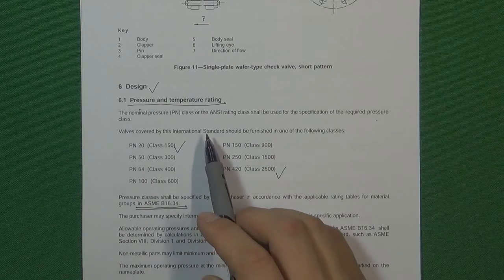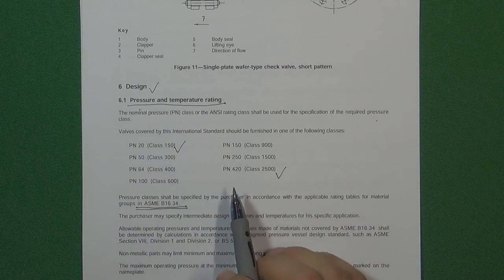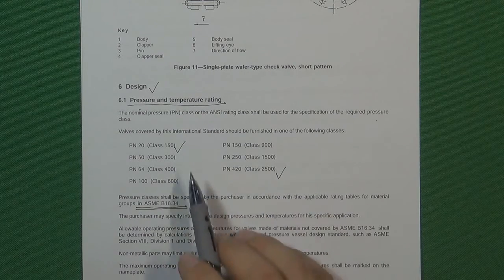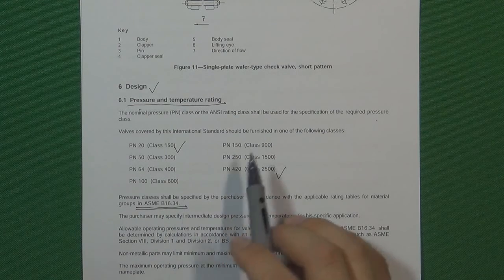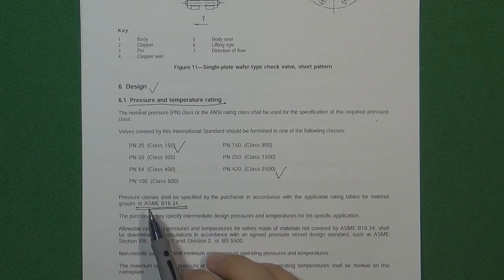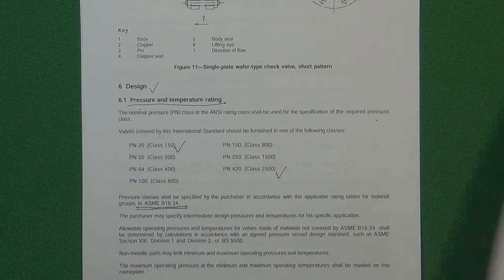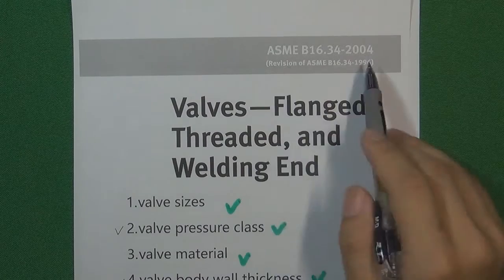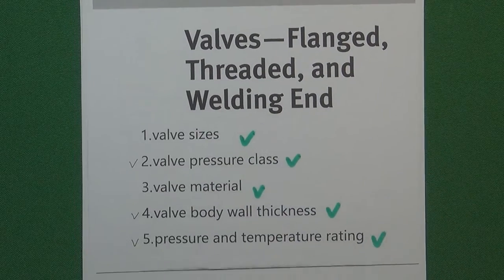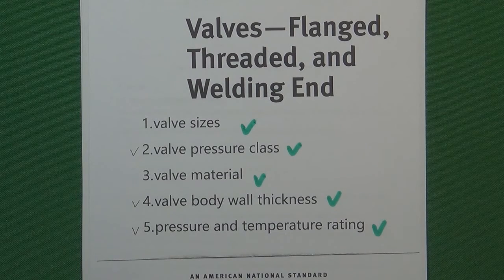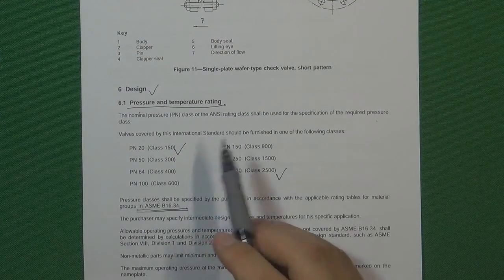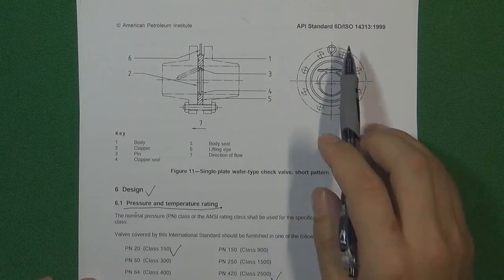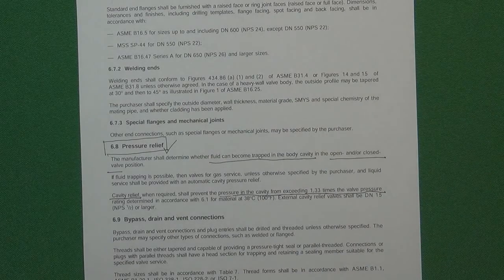In API 6D, the pressure-temperature rating, pressure class, and valve body wall thickness all follow ASME B16.34. That is the reason why ASME B16.34 is called the foundation standard in the valve industry — it contains many basic design factors. But in addition to pressure class and wall thickness, API 6D also addresses one more aspect of pressure, which is called pressure relief.